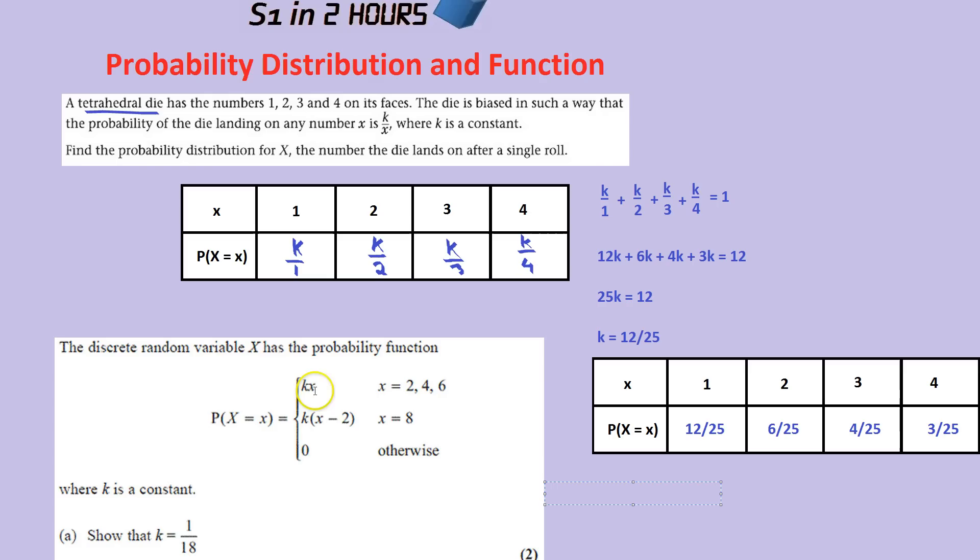Let's put 2 into here. So that would be 2k. Putting 4 in, that would be 4k. And putting 6 in would be 6k. Now, when we put 8 in, we have to put it into this expression. Because remember, it matches up. To get 8, the probability is over here. 8 minus 2 is 6. So that would be 6k.